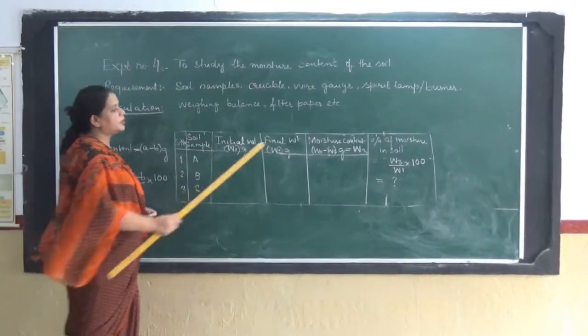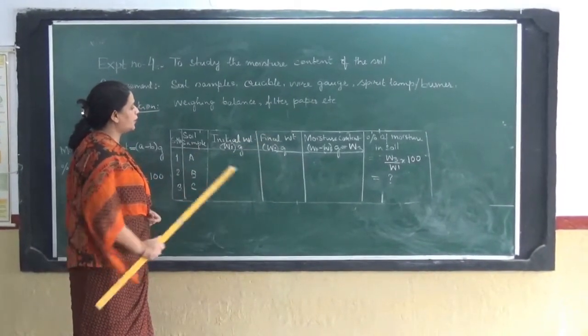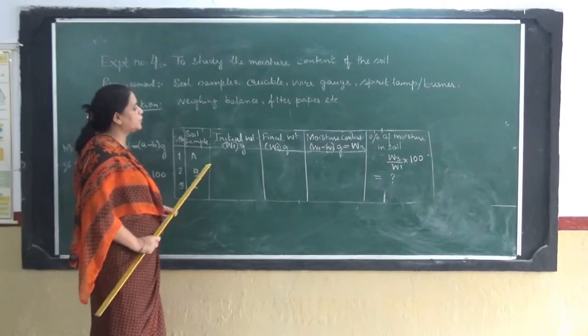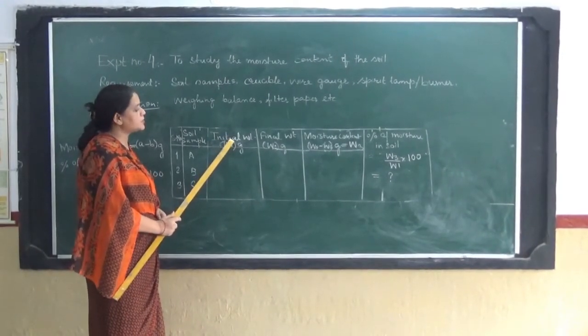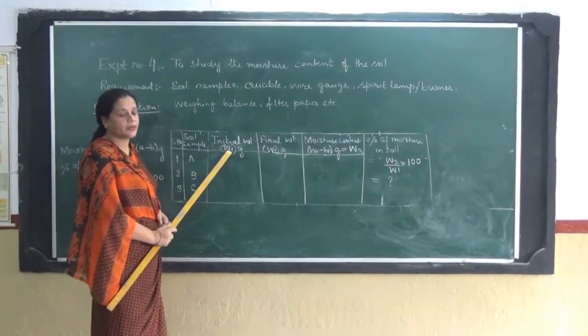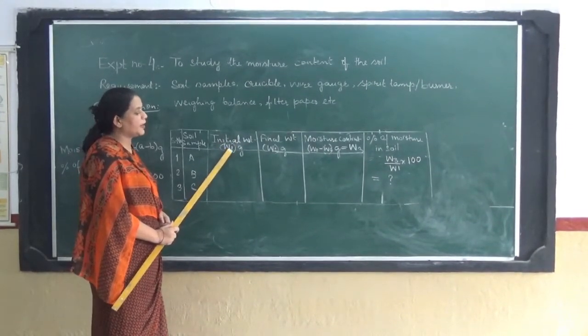I have drawn that content table over here. In this table you will be able to notice that the first thing that we have to do in this experiment is to measure the weight of the soil that is denoted by W1.